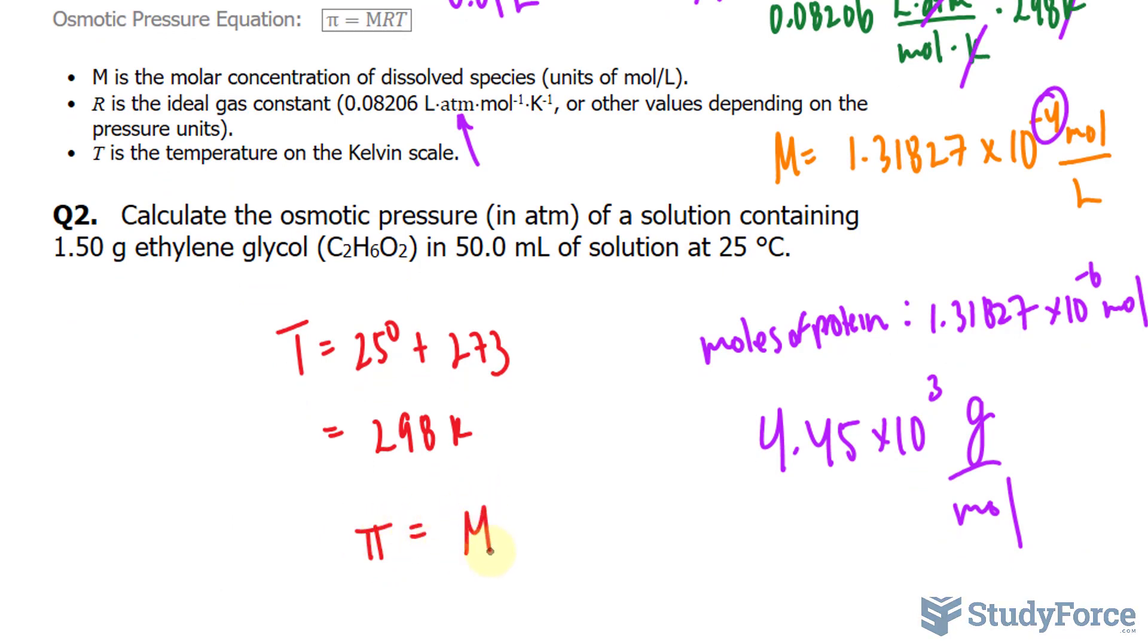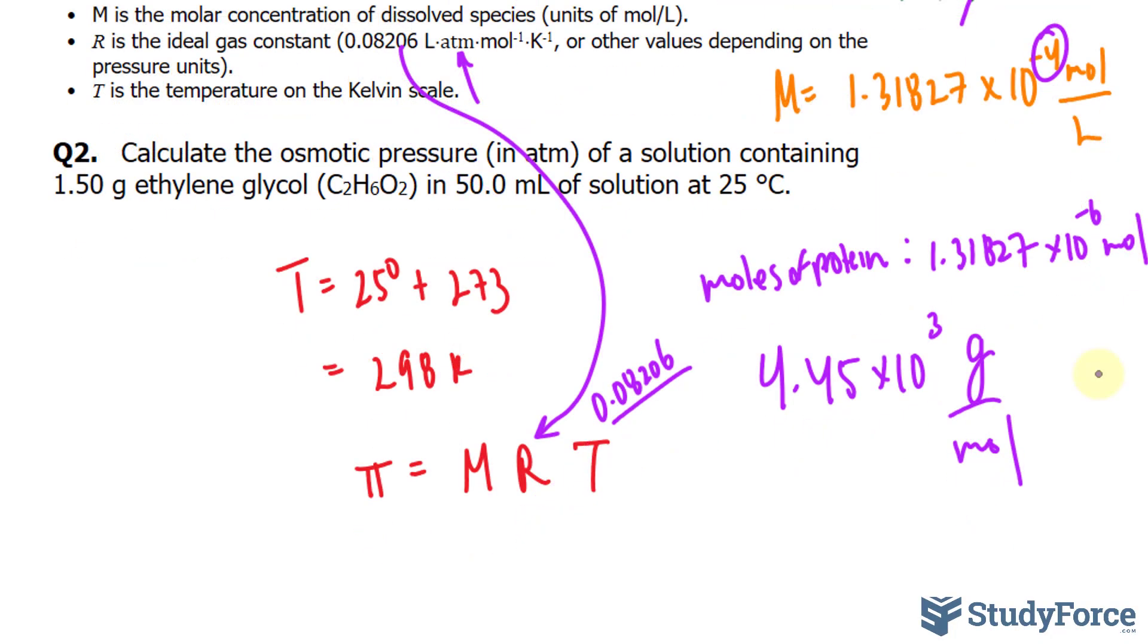The osmotic pressure is the molarity times the ideal gas constant times the temperature. The ideal gas constant, shown right there, will be substituted here: 0.08206. And now we need to find the molarity.